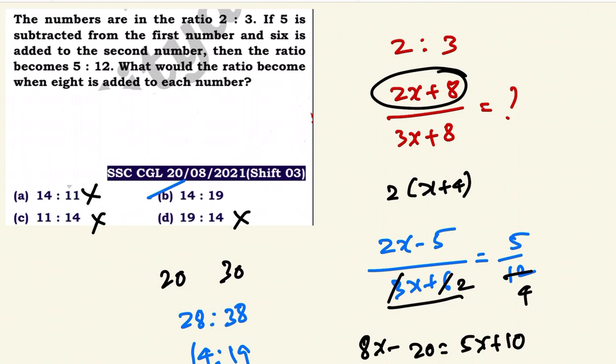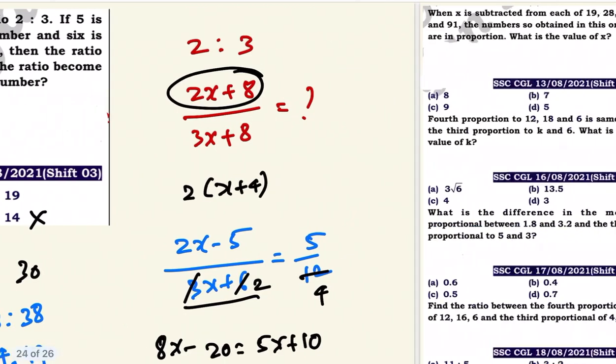So we go straight to option B as the answer. The ratio when 8 is added to each number is 14 is to 19.